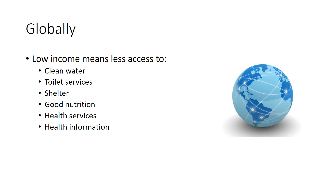Low income people have less access to toilet services. Being able to go to the bathroom in a hygienic manner, in a safe way, near to your home, is a privilege in the world that high income people take for granted. If you're poor, you're less likely to have good shelter — less likely to keep out the elements or criminals. Globally, low income means poor nutrition: you can't afford complex proteins, healthier foods, or a variety of vegetables. Low income also means less access to health services, vaccination, prenatal care, and care if you're injured or become sick — not just treatment, but prevention as well.